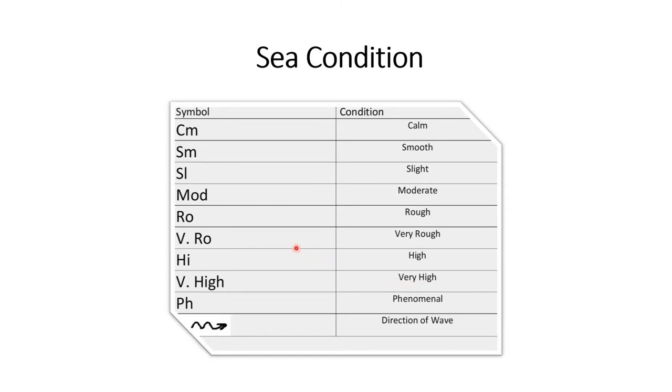Sea condition can be determined by the following symbol. C-M means calm condition, S-M smooth, S-L slight, M-N, M-O-D moderate, R-O rough, V-R-O very rough, H-I high and very high, phenomenal and this symbol means the direction of wave.